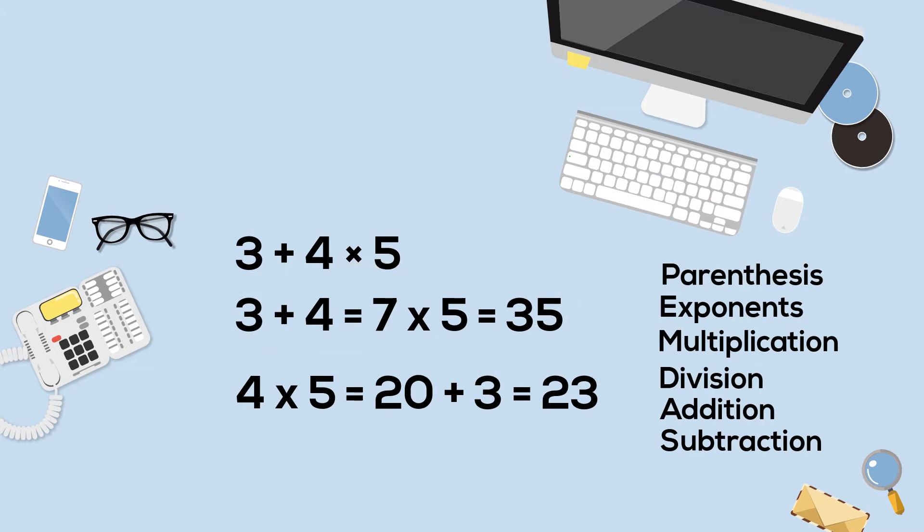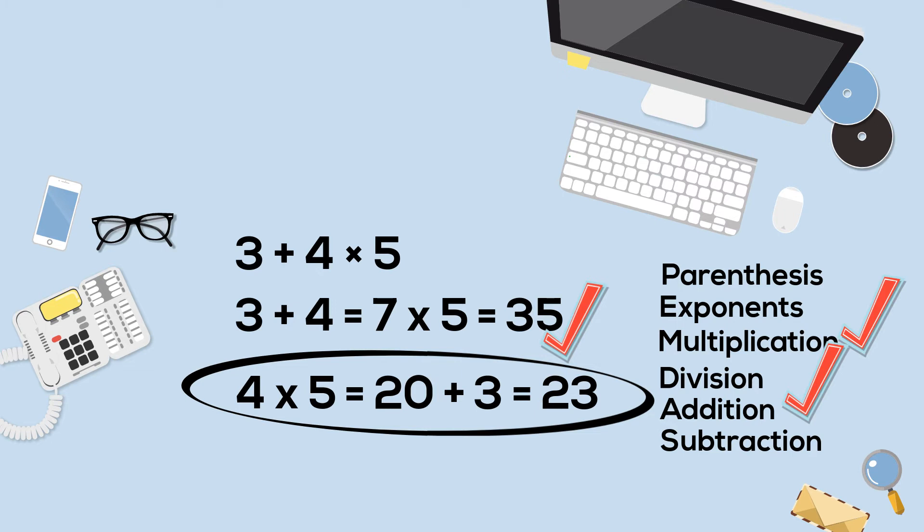The second answer is 23, and that is the correct answer. You follow the order of operations. You multiply first, 4 times 5, which is equal to 20, and then you complete addition. So the correct answer is 23.